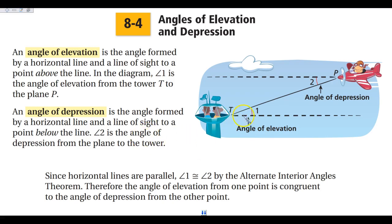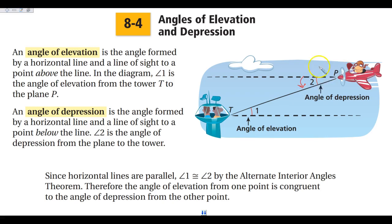An angle of elevation comes from the horizontal line and looks upward. An angle of depression comes from a horizontal line and looks downward. If we look at the plane and the air traffic controller, the plane up in the sky — if he's looking straight ahead, he can't see the air traffic control tower. When he looks down, he will see the tower, so he's looking at an angle of depression.